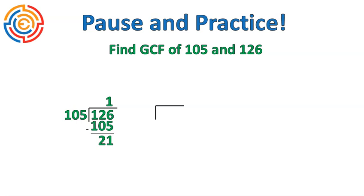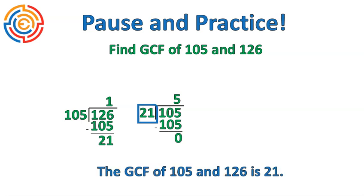Because we have a remainder, we need to do a second set of long division. We're going to put the divisor from the first question inside. The remainder becomes our new divisor. How many groups of 21 inside of 105? There are 5. When we multiply, we get a zero remainder. That tells us that 21 is the greatest common factor of 105 and 126.